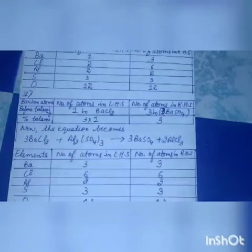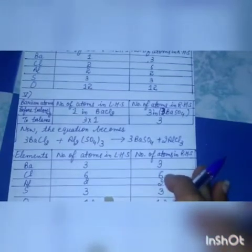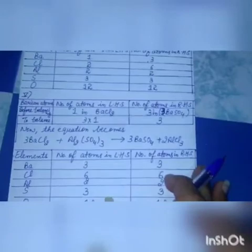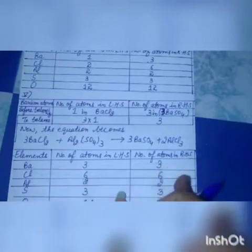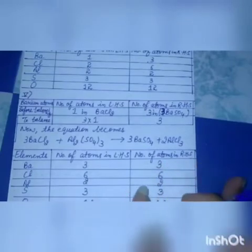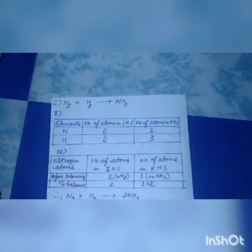On the right hand side there are also three atoms of barium, six of chlorine, two of aluminium, three of sulfur, and twelve of oxygen. The chemical equation is now balanced — this method of balancing a chemical equation is called the hit and trial method. We have successfully balanced the equation between barium chloride and aluminium sulphate.